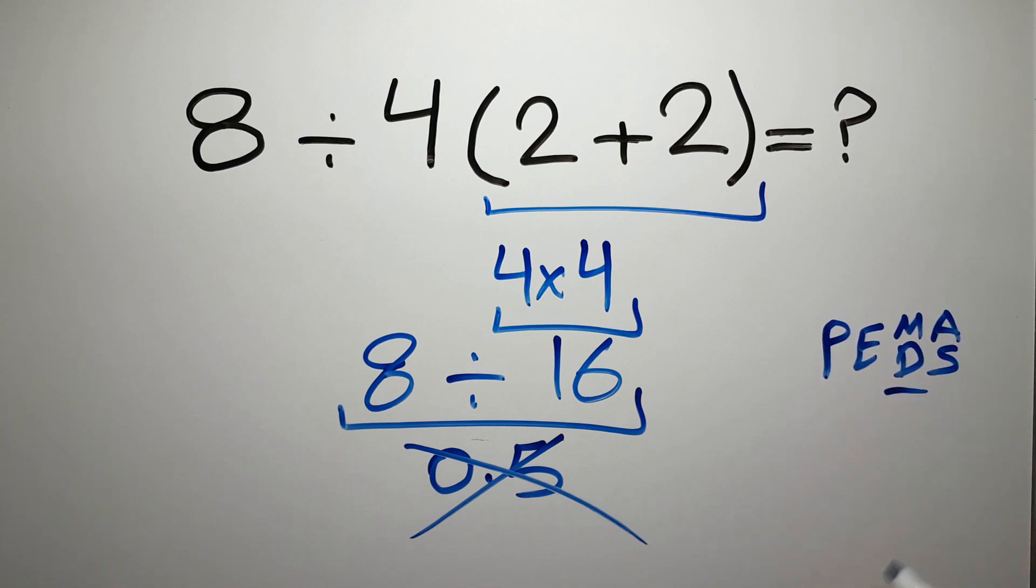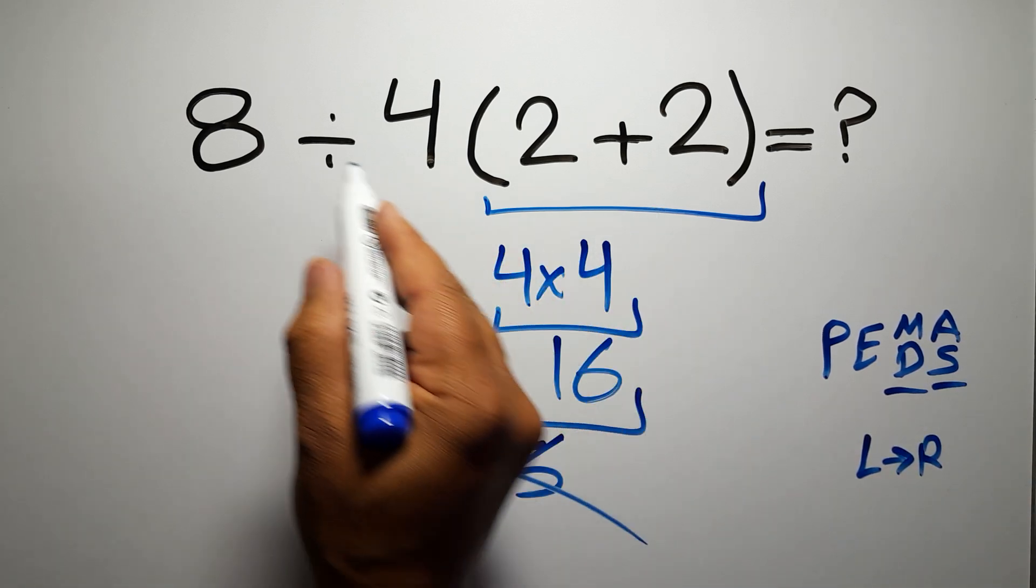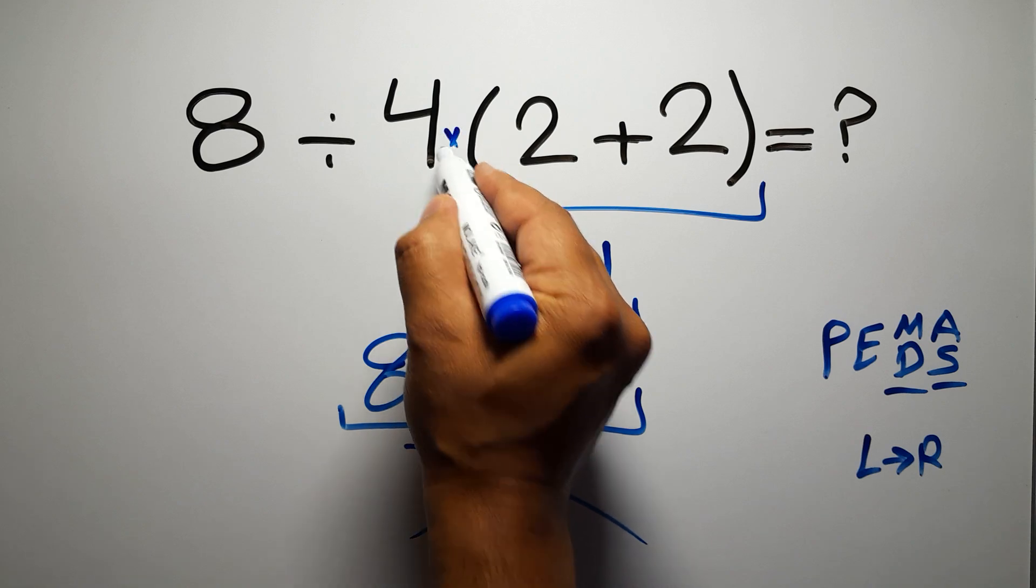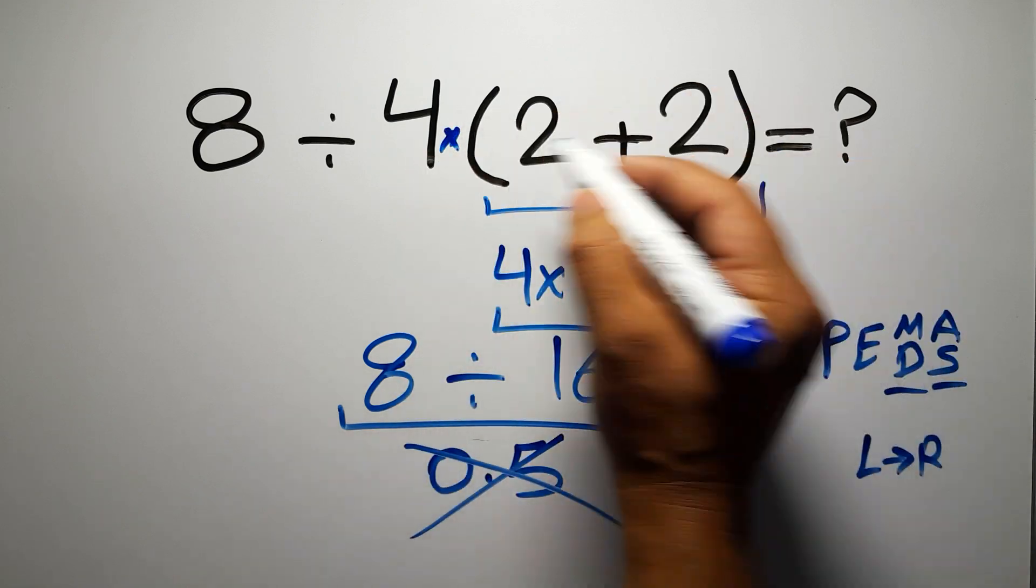Remember that multiplication and division have equal priority and we have to work from left to right. And the same applies to addition and subtraction. In this expression, we have one division, one multiplication, and one parentheses.